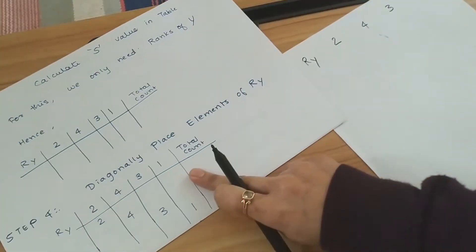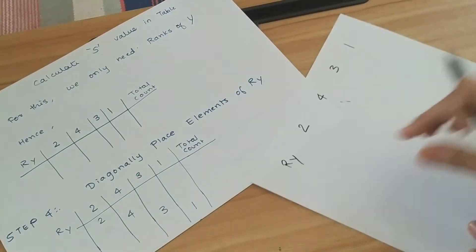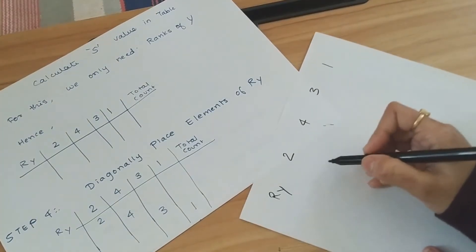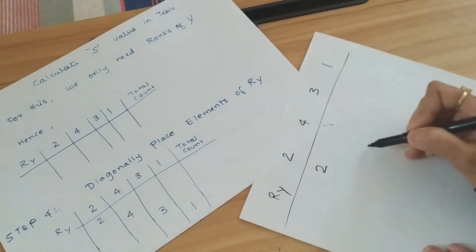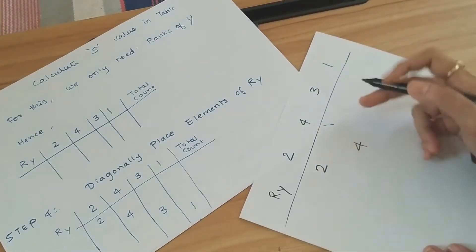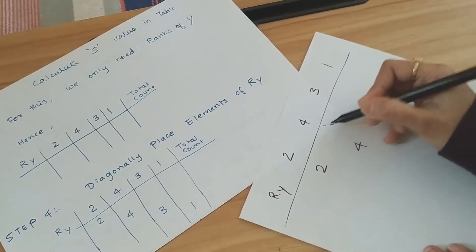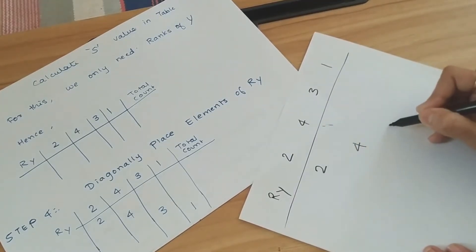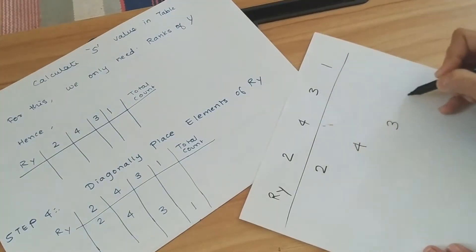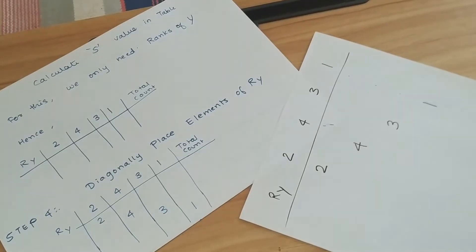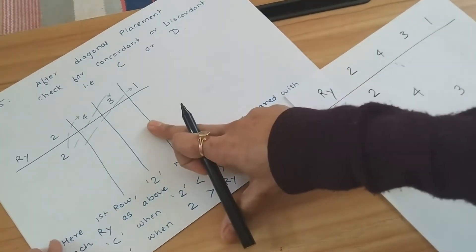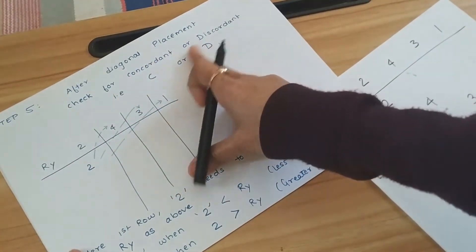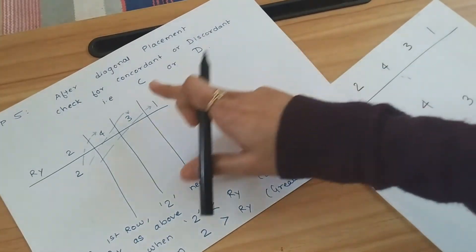In step 4, we diagonally arrange the elements of Ry. We write 2 as-is on the first row; 4 goes on the second row leaving one gap; 3 goes after 2 gaps; and 1 goes after 3 gaps. These are the diagonal placements of the elements.